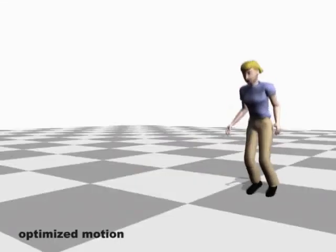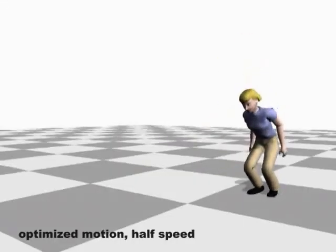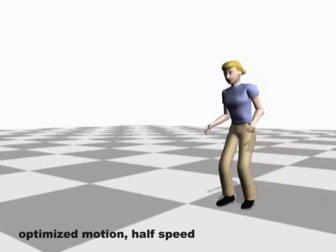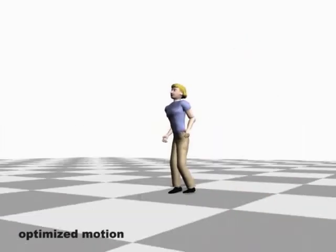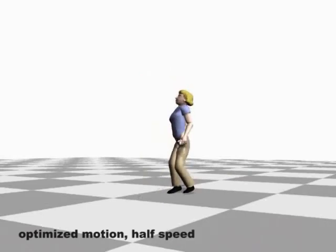The motion capture data helps the optimizer to find natural-looking motions. A jump optimized in six degrees of freedom. A jump optimized in twenty degrees of freedom does not appear natural.